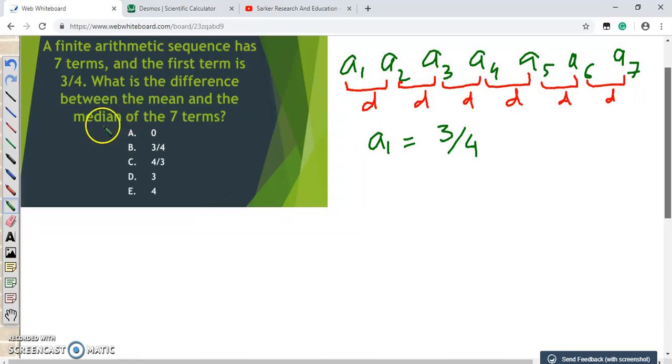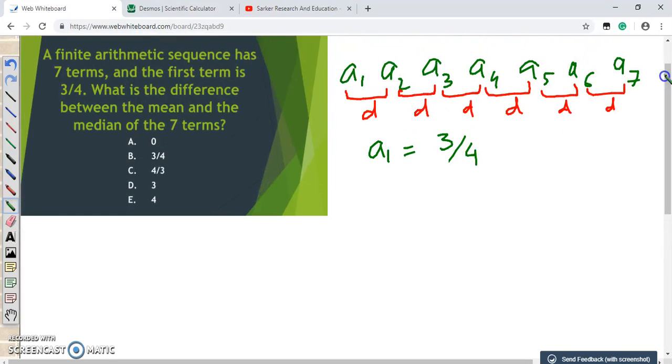We will have to find the difference between the mean and the median of these 7 terms. So we will have to find the mean and the median separately. And in order to know that, we will have to find the numbers. So the first number is 3/4. So what will be the second number? It will be 3/4 plus D. Third will be 3/4 plus 2D. The fourth will be 3/4 plus 3D. The fifth number will be 3/4 plus 4D. The sixth number will be 3/4 plus 5D. And the seventh number will be 3/4 plus 6D. So the a7, that means the last term or the seventh term in this sequence, is 3/4 plus 6D.